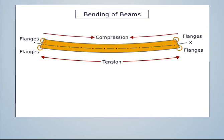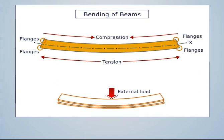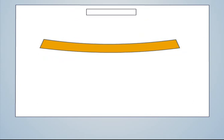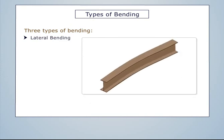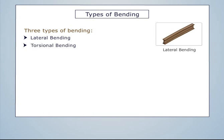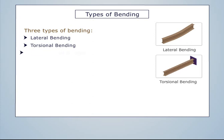When a beam experiences bending moment due to external load, it will change its shape and also due to bending, internal stresses will be developed. There are three types of bending: lateral bending, torsional bending, and vertical bending.